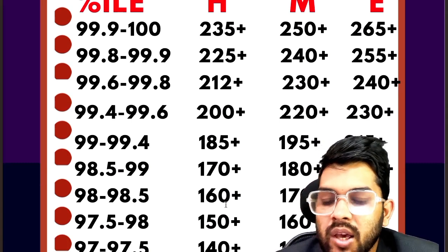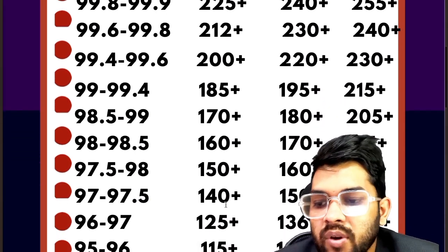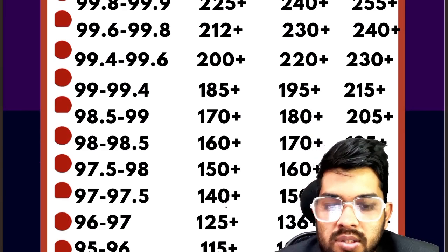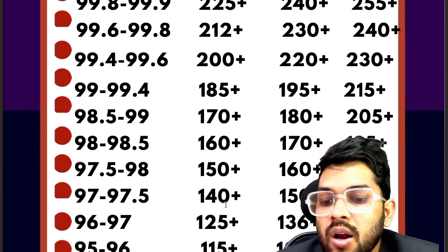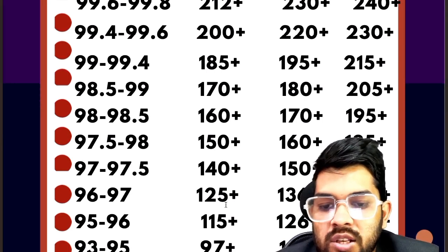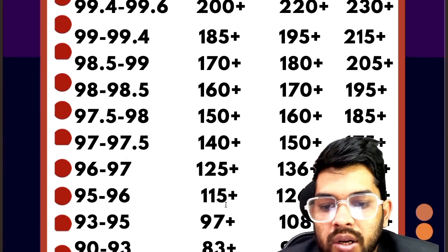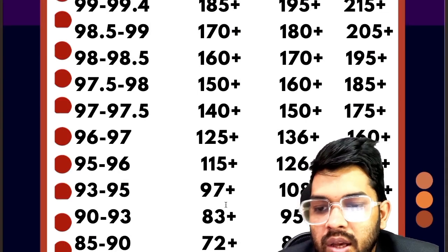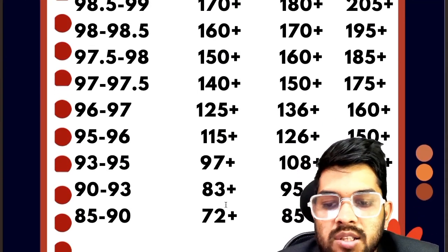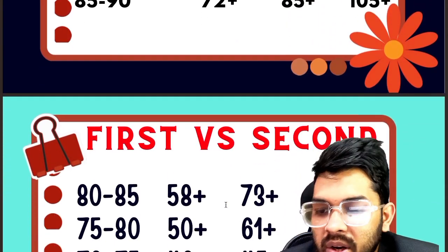For 97.5 percentile, 150, 160, and 185 marks; for 97 percentile, 140, 150, and 175; for 96 to 97, 125, 136, and 160 plus for hard, moderate, and easy paper. For 95 plus, 115, 126, and 150; for 93 percentile, 97, 108, and 130; for 90 percentile, 83, 95, and 150; for 85 percentile, 72, 85, and 105 marks is required.